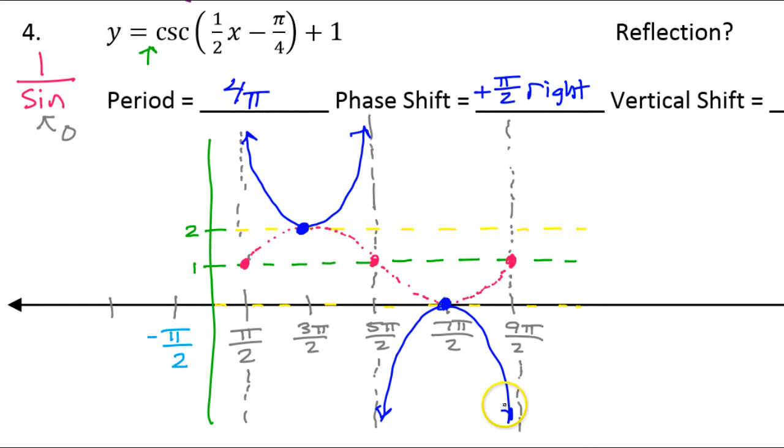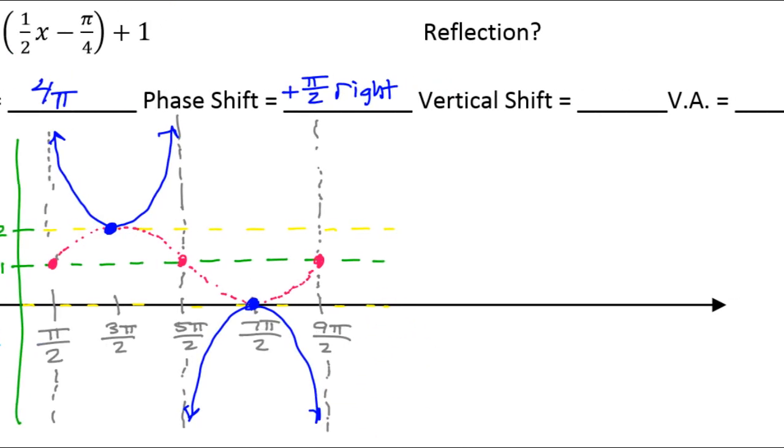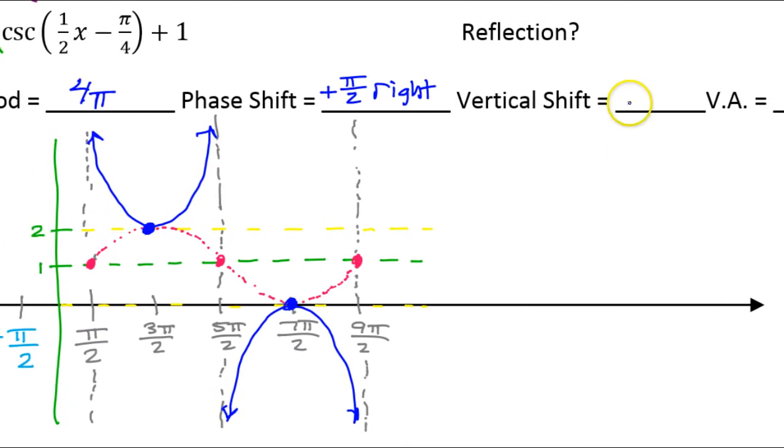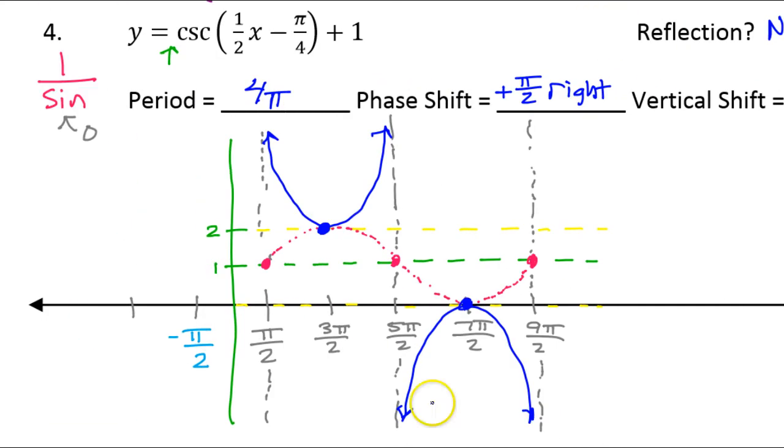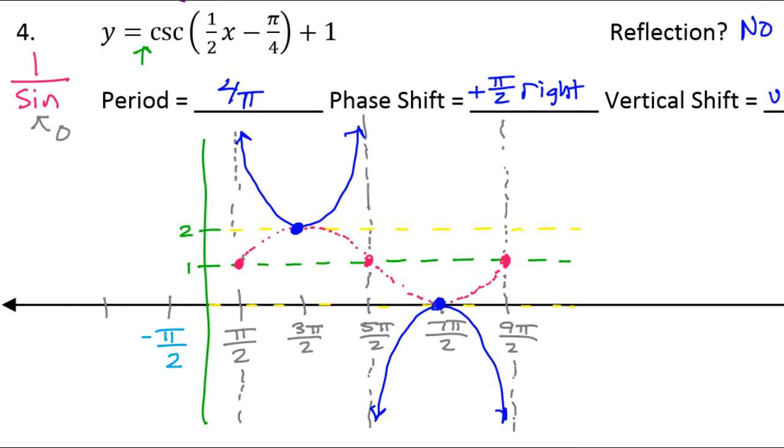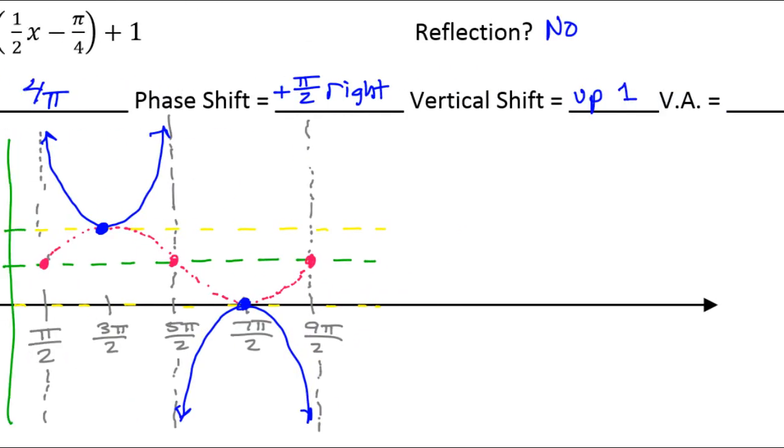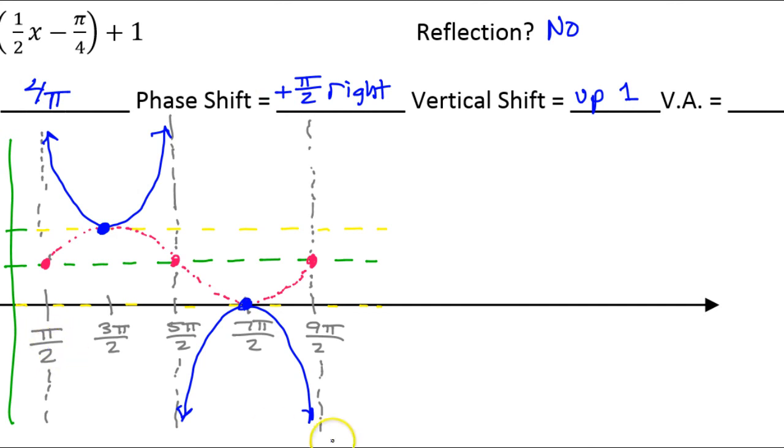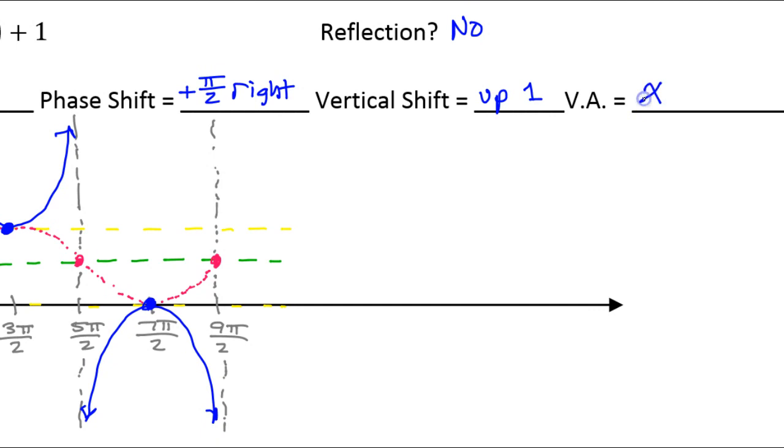Now it's time to let's see - vertical shift up 1. Reflection, there was none. There would be a reflection if there was a negative sign in the front. Now vertical asymptotes, I always will start with the first vertical asymptote pi over 2. A vertical line is always x equals something, so I'm gonna say x equals pi over 2. That's my first asymptote.